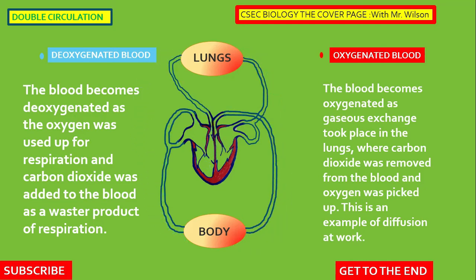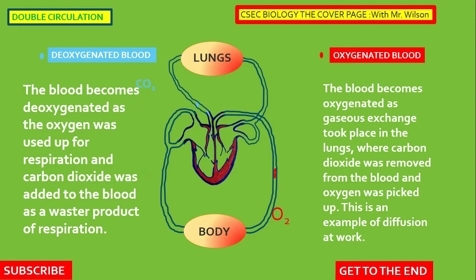This waste must be removed from the blood, so the blood continues to move the waste around, finally emptying off the carbon dioxide at the lungs. When it gets to the lungs, the blood becomes oxygenated as gaseous exchange takes place — carbon dioxide is removed from the blood and oxygen is picked up. This is an example of diffusion, and gaseous exchange in the lungs is a good example of diffusion.